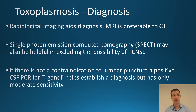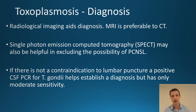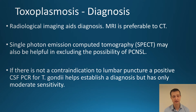In terms of diagnosis, radiological imaging is a good aid. MRI is exceptionally preferable to CT, but single photon emission computed tomography (SPECT) is also very useful — specifically where you are trying to exclude the possibility of primary central nervous system lymphoma.